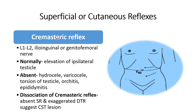Now we have to perform the cremasteric reflex, root value L1 to L2, ilio-inguinal and genitofemoral nerve. To perform this reflex, we give a light scratch over the skin on the inner aspect of the thigh, which leads to contraction of the cremasteric muscle and quick elevation of the ipsilateral testis. The scratch should be directed downward. Absent reflex can be seen in hydrocele, varicocele, torsion of testis, orchitis, or epididymitis. Dissociation — absent superficial reflex with exaggerated deep tendon reflex — suggests a pyramidal or corticospinal tract lesion.